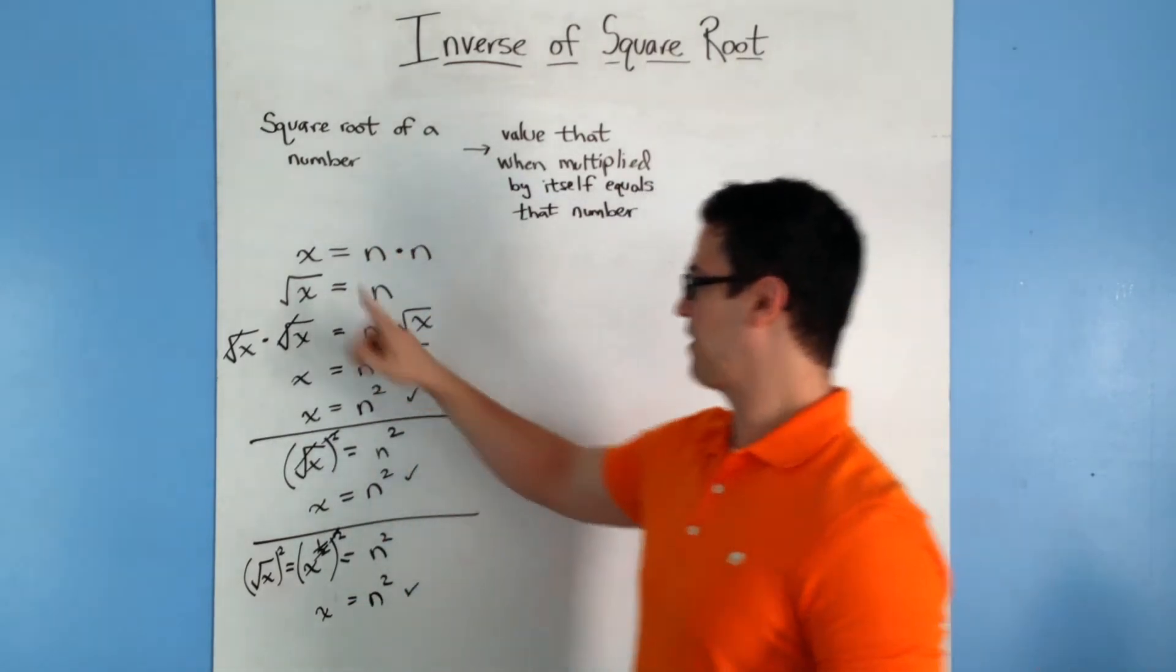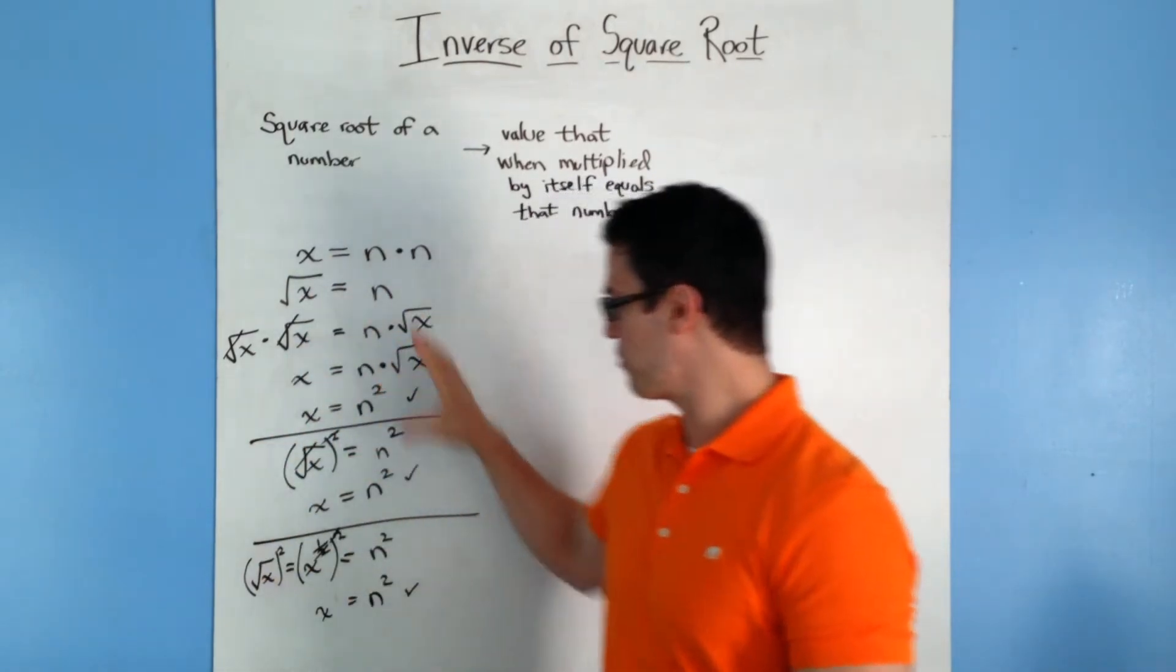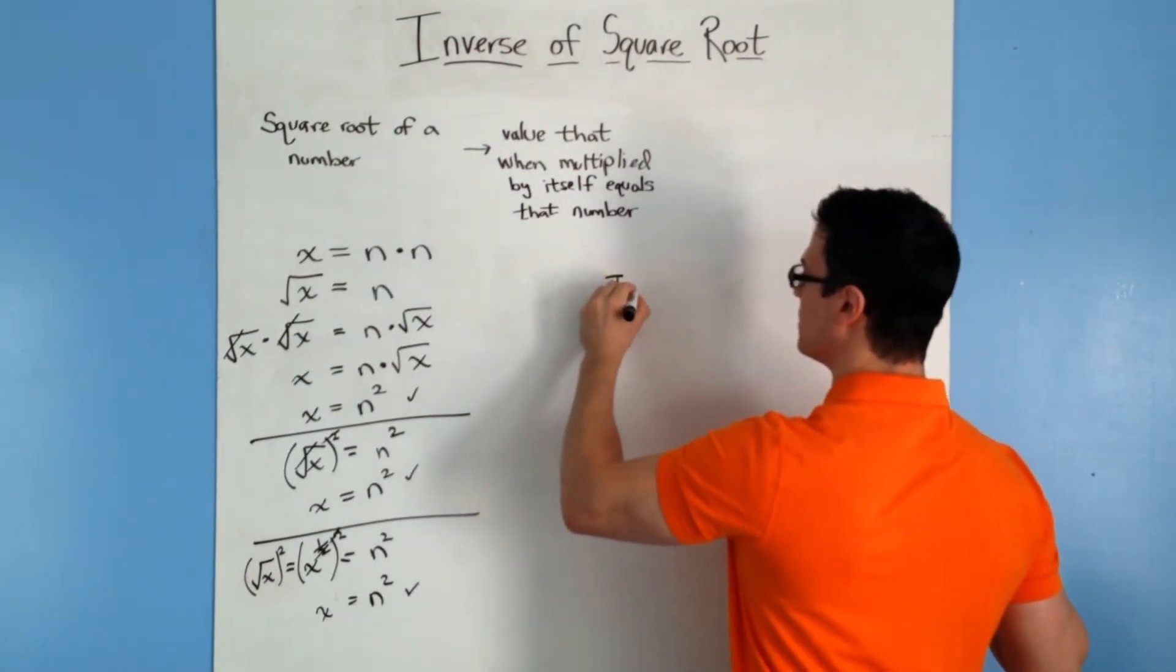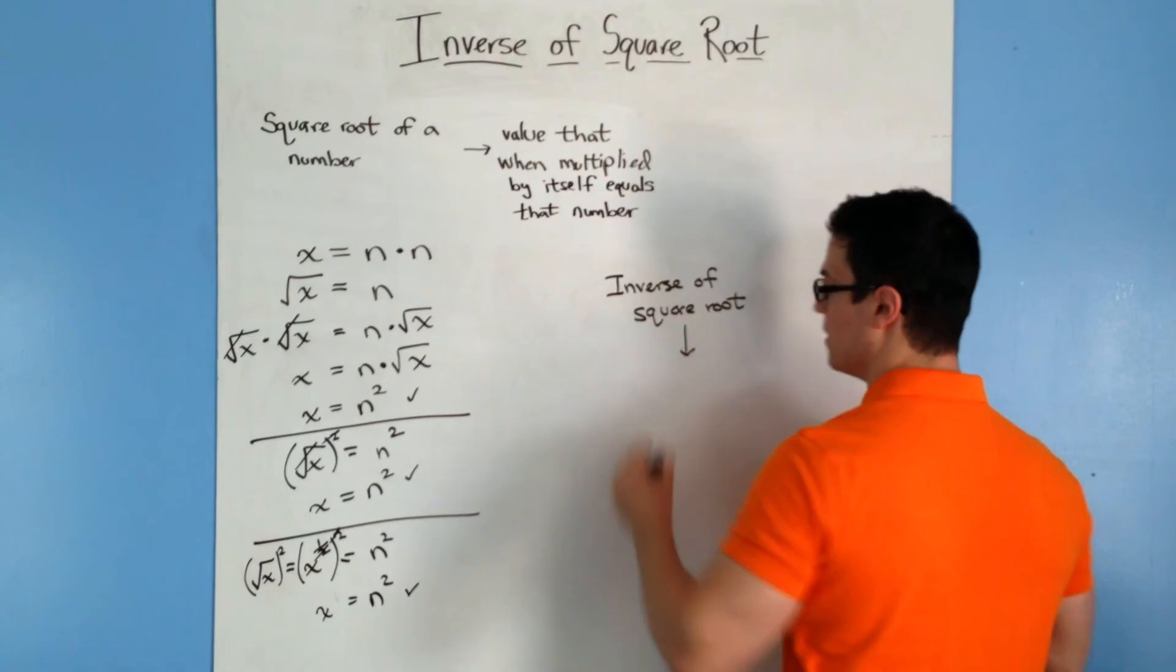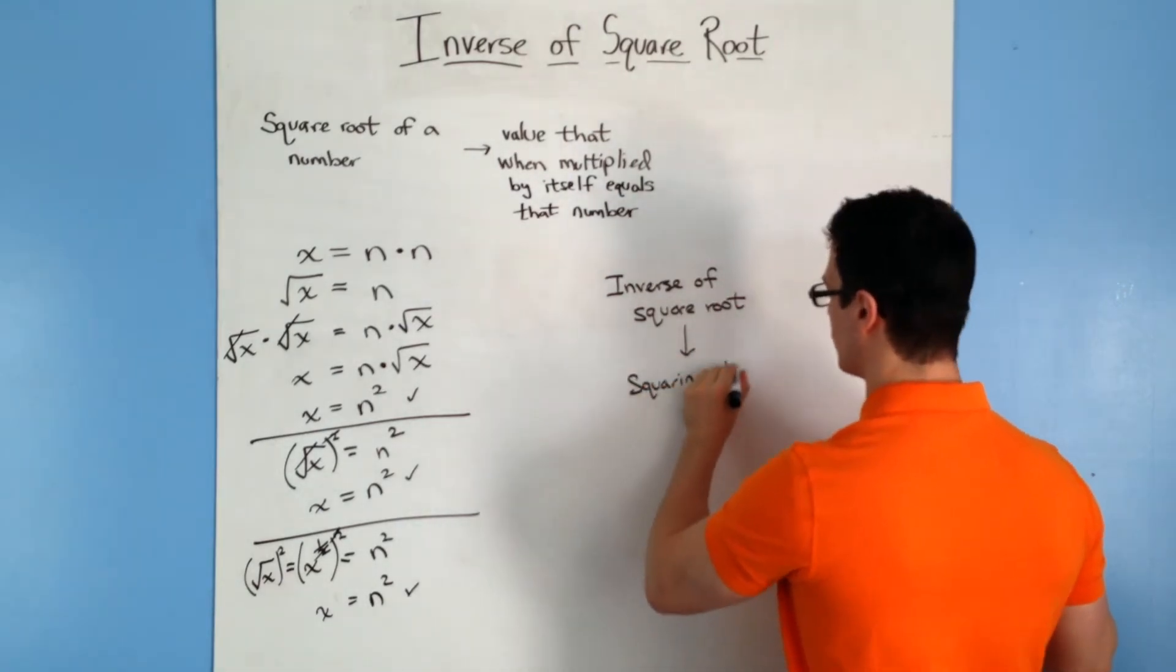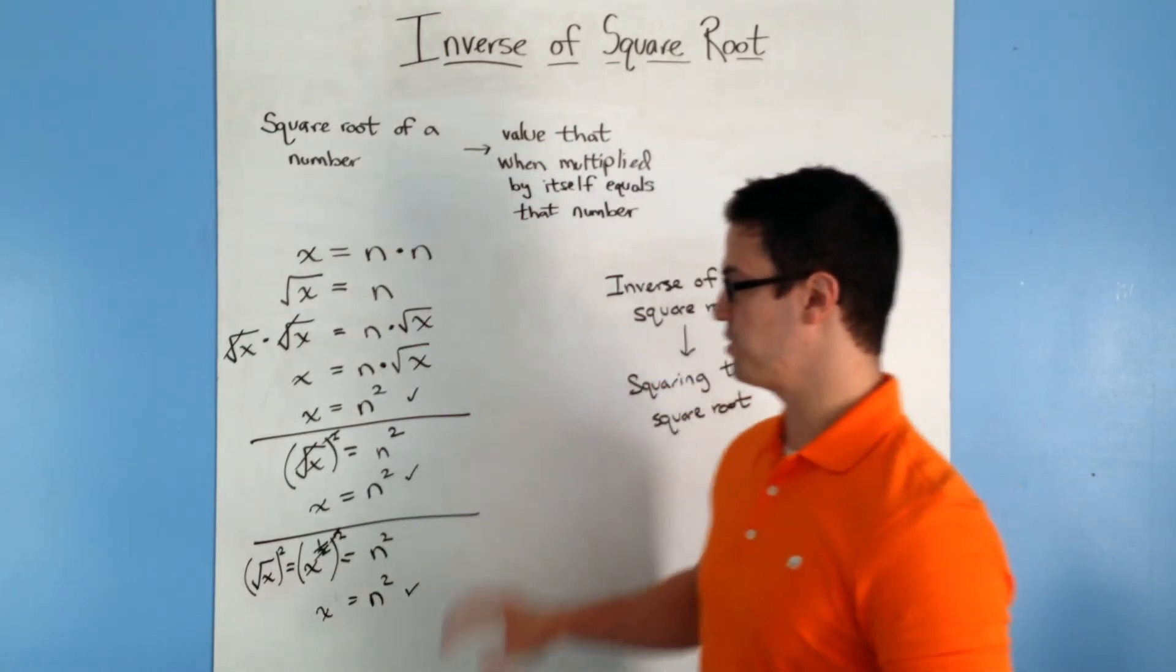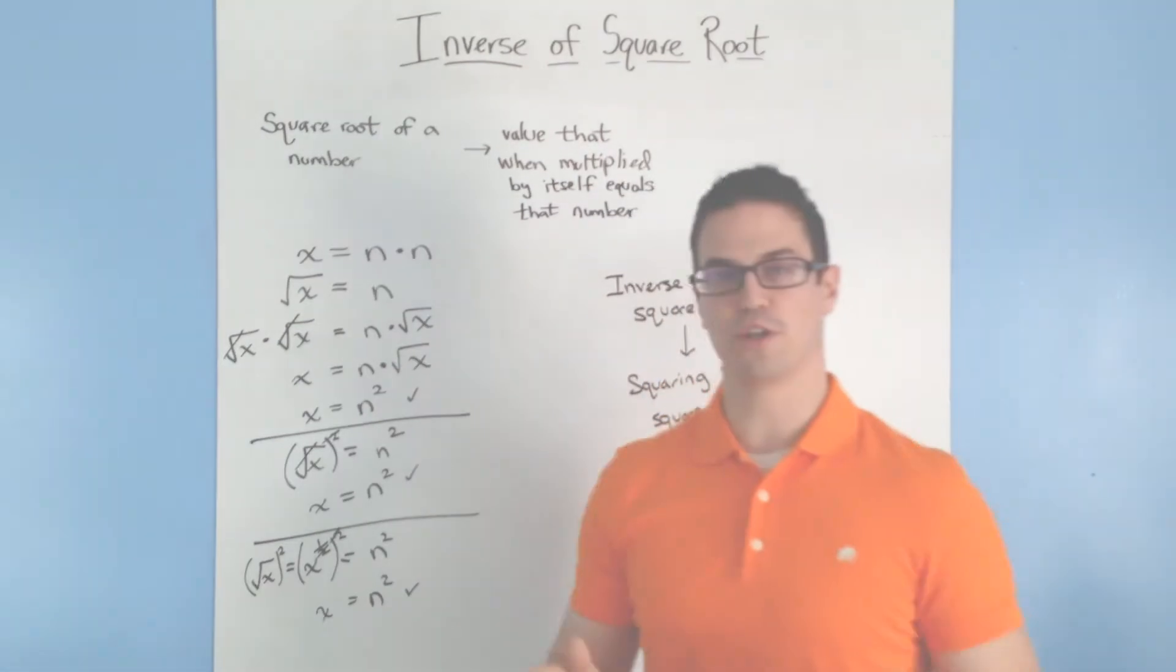So there's three ways of getting rid of this square root symbol, and they're all pretty much the same, just a little bit different notation. So the take-home message from this lesson is that the inverse of square root is basically just squaring the square root. And there's three different ways to do it. Pick the one that's easiest for you to use.